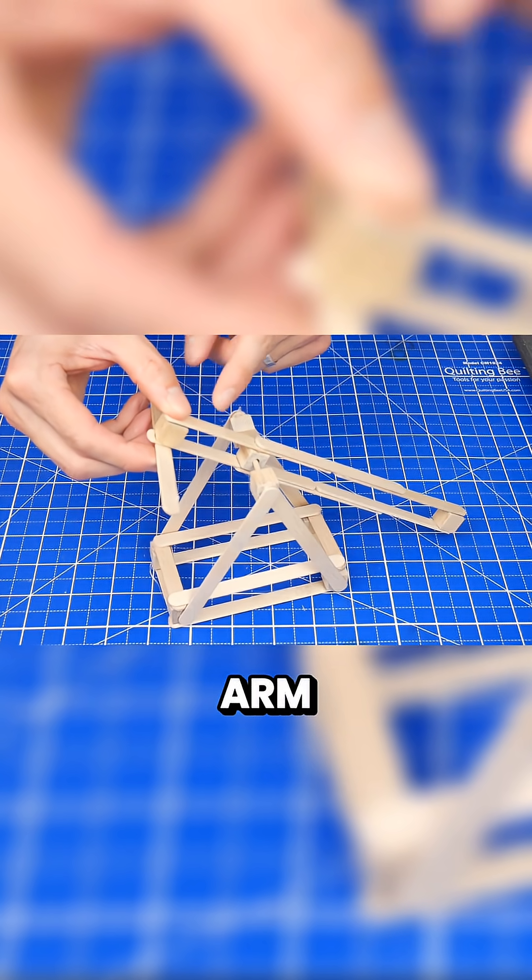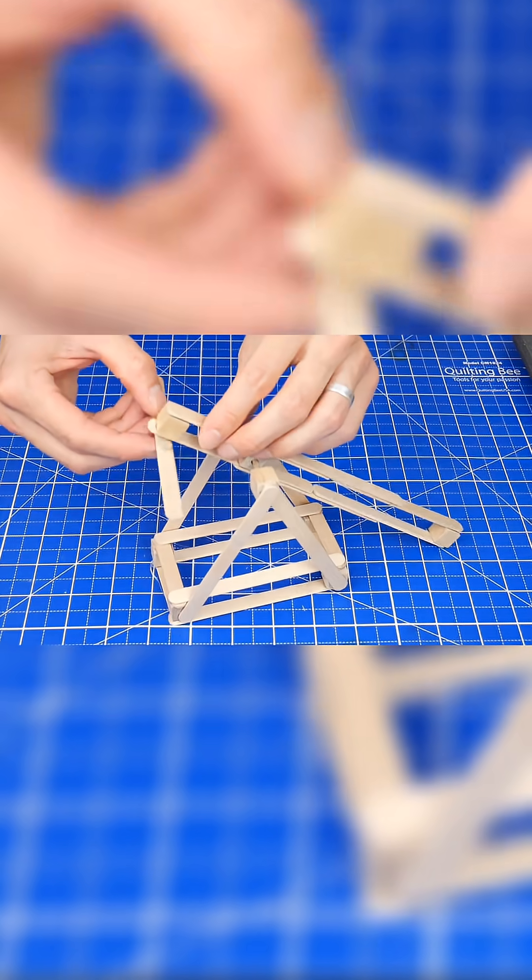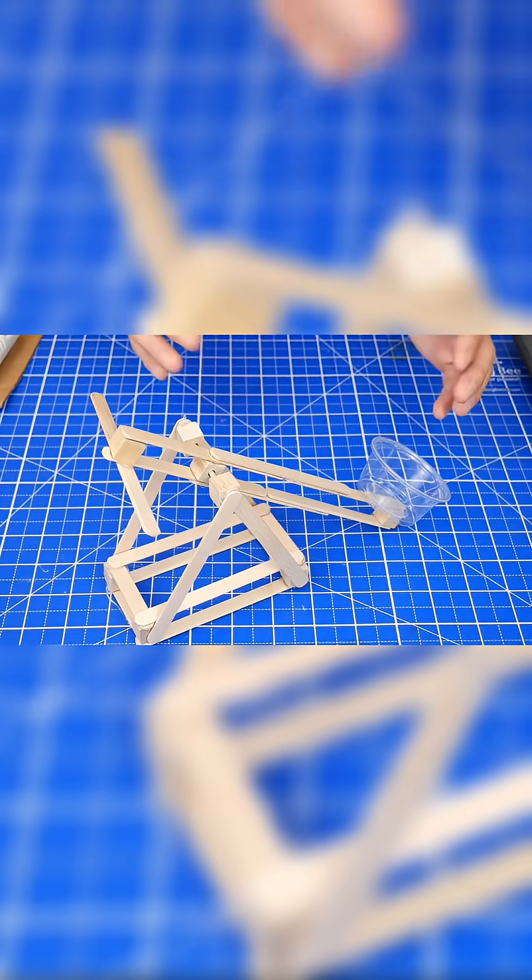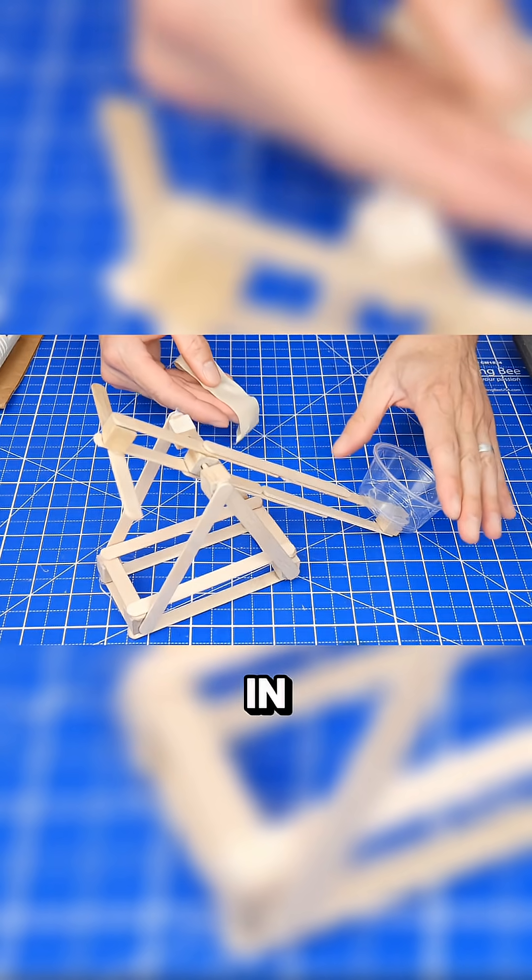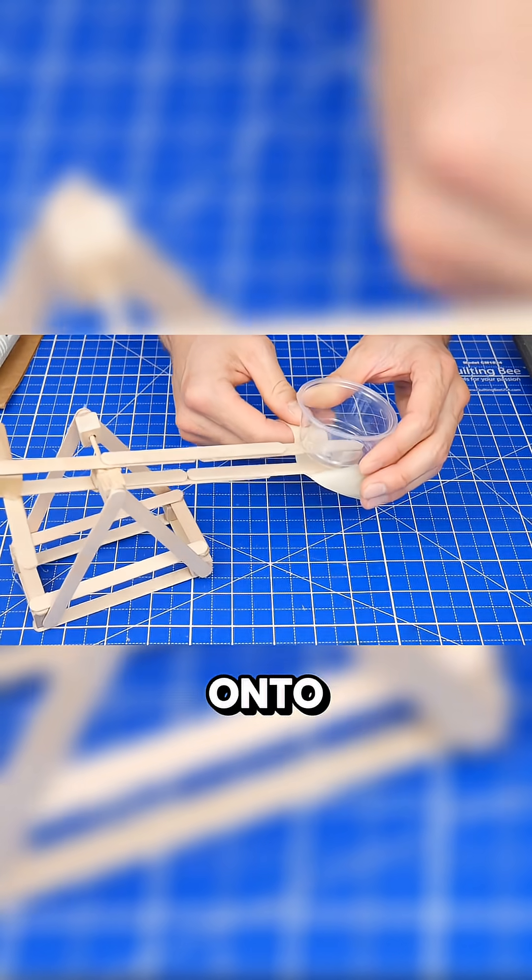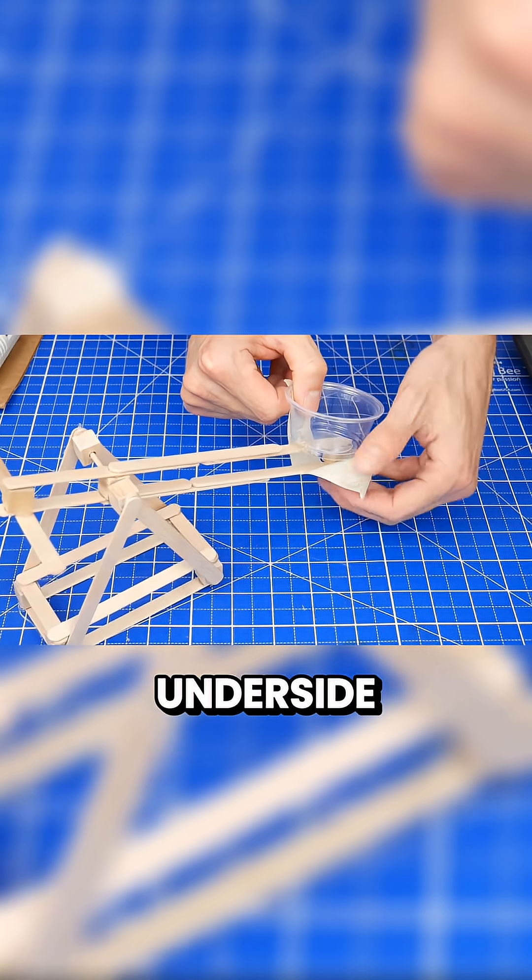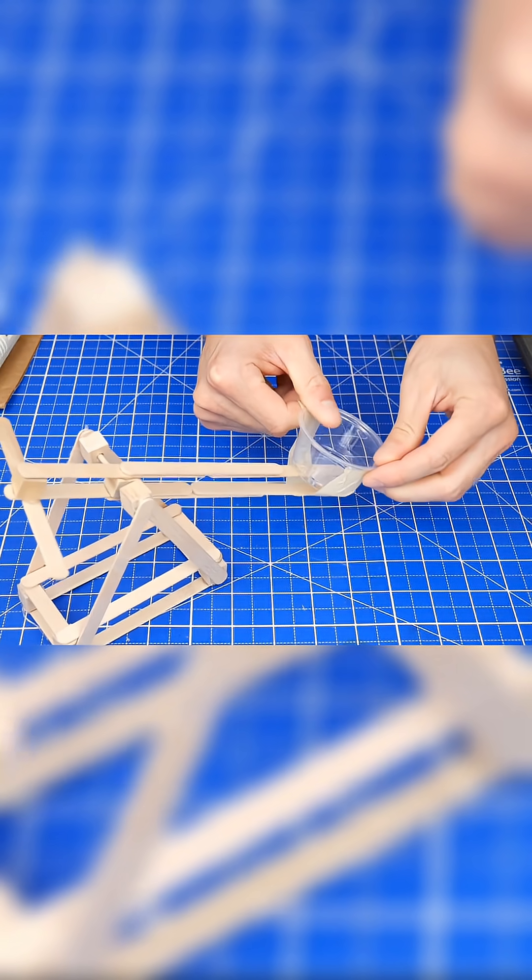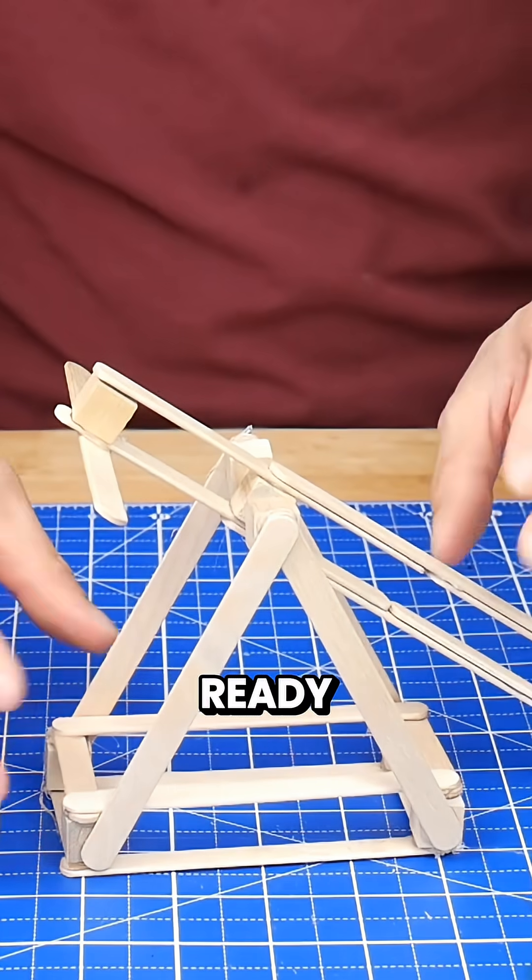In addition to the glue, also get a long piece of masking tape and wrap it onto the cup from the underside of the catapult arm. Okay, we are ready to fire.